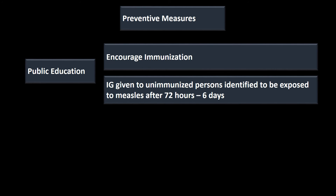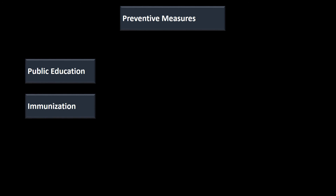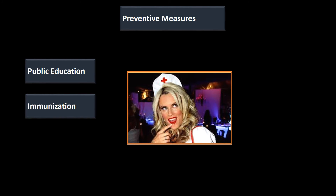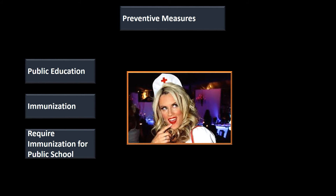To summarize the exposure response: within 72 hours, give the MMR vaccine; from 72 hours to six days, give the immunoglobulin injection. Don't take medical advice from celebrities — these immunizations are safe and they save lives. Measles still kills a significant number of people in the undeveloped world. Requiring immunizations for public schools is also key — the first dose is given at 12 to 15 months and the second dose at four to six years, just before a child enters public school.